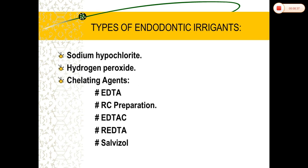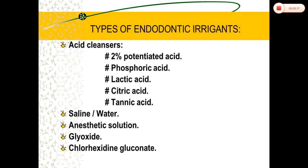Coming to types of endodontic irrigants, we have chemical and natural categories. Under chemical irrigants, we have tissue-dissolving agents such as sodium hypochlorite and chlorinated compounds, antibacterial agents including bactericidal agents like chlorhexidine and bacteriostatic agents like MTAD, and chelating agents including mild pH agents like HEBP and strong pH agents like EDTA. Under natural agents, we have antibacterial agents like green tea, triphala, etc.